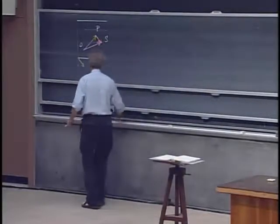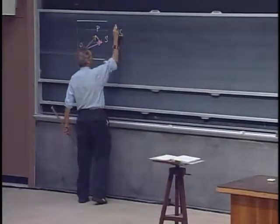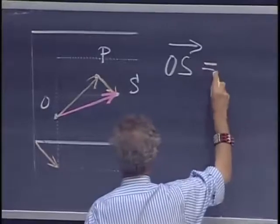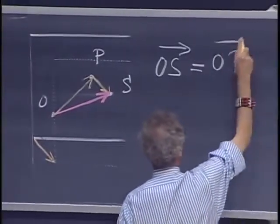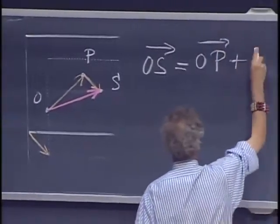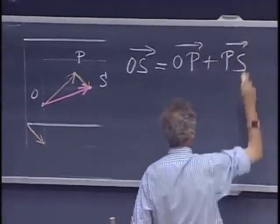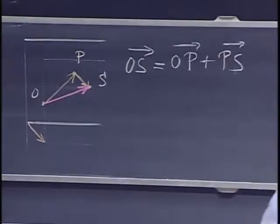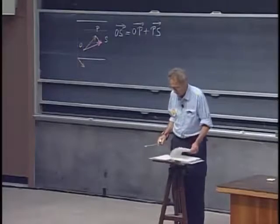We say here that the vector OS, we put an arrow over it, is the vector OP with an arrow over it plus PS. This defines how we add vectors.